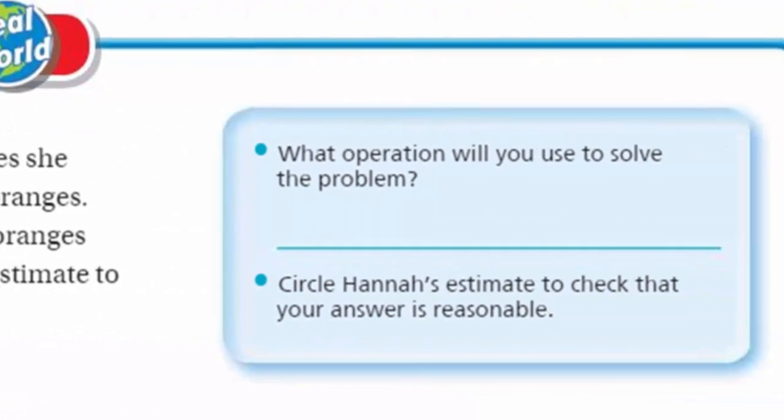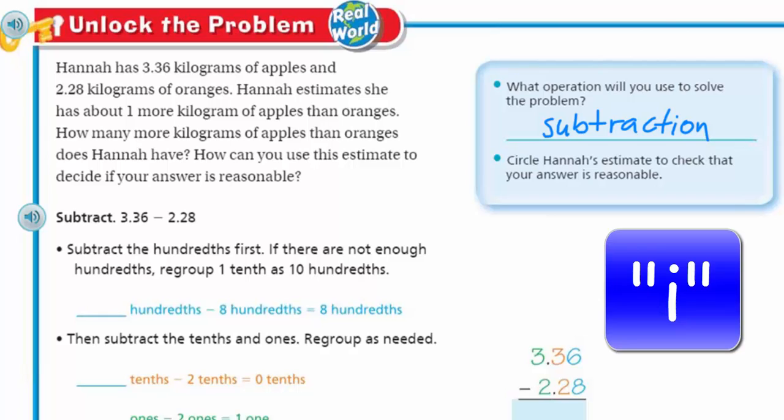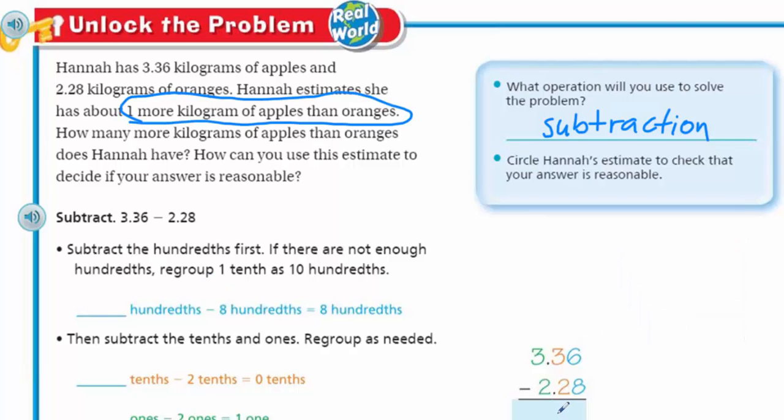It says what operation will you use to solve the problem? Well there's some key words in the problem! If you notice it says when you ask the question how many more kilograms of apples than oranges does Hannah have? That question, especially that how many more lets us know we are subtracting. Just like the word combined had to do with addition, this problem has to do with subtraction.